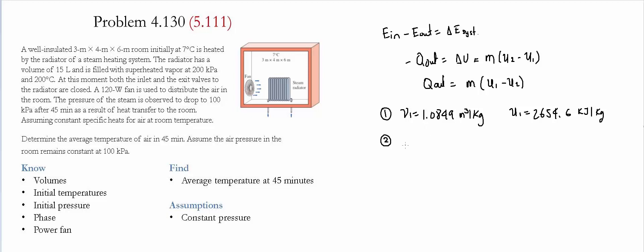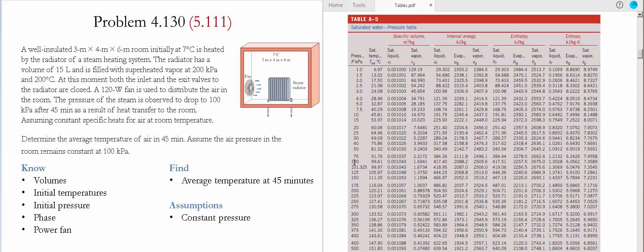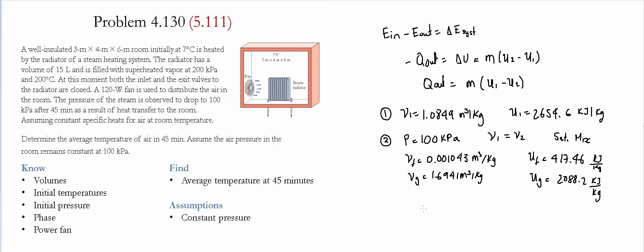At state 2, the pressure has dropped to 100 kilopascals. Since the radiator is a fixed volume, the specific volume at state 2 equals that at state 1. We go to Table A5 at 100 kilopascals and compare the saturated liquid and saturated vapor specific volumes. The value we have falls between those two, so the phase at state 2 is a saturated mixture. We use the specific volumes to find the quality: x = (V2 − Vf) / (Vg − Vf).